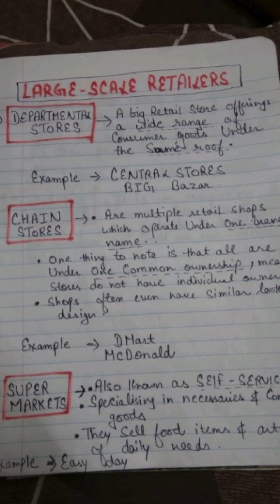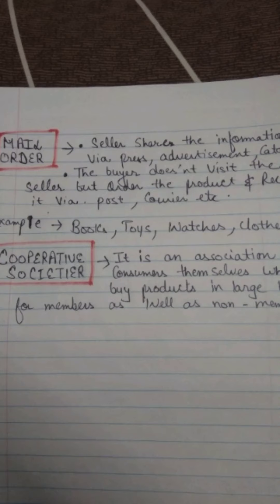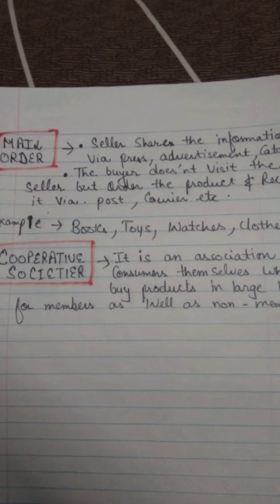Fourth is mail order — the seller shares information via press advertisements and catalogues, and the consumer places an order and receives products via post or courier without visiting the seller. Examples include books, toys, watches, and clothes — platforms like Zomato and Flipkart fall in this category. Fifth are cooperative societies — an association of consumers themselves who buy products in large bulk for members as well as non-members, helping one another.